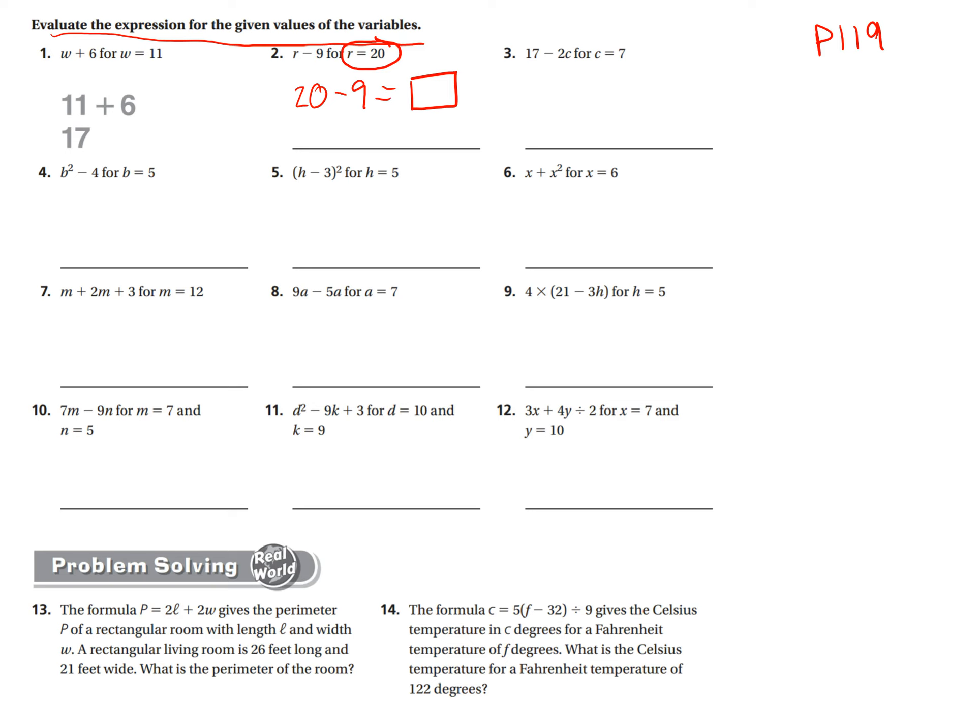Okay, let's jump down to 6. Wherever I see an x, I put a 6. So here's an x, so I put a 6. Plus x squared, I put a 6 squared. So now you're going to do 6 times 6 to get 6 squared. And then plus 6. And that's going to give you your final answer here.